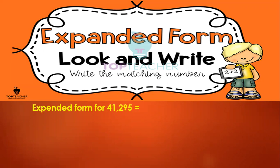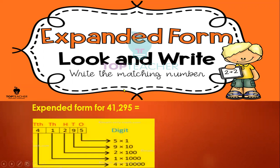I have 41,295. 5 is a 1, 9 is a 10, 2 is a 100, 1 is a 1,000, 4 is 10,000.